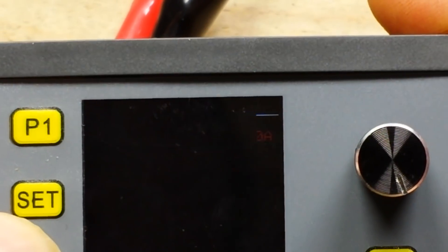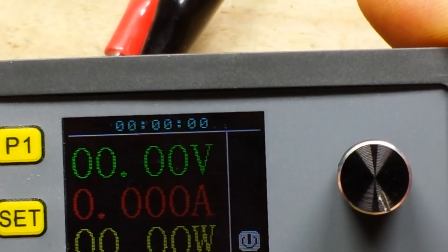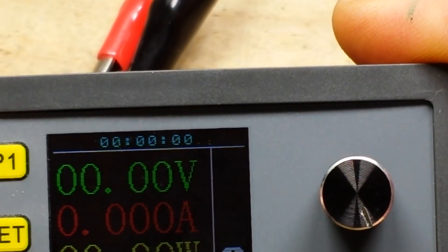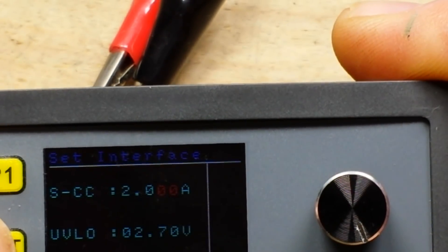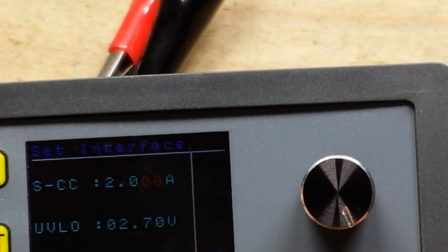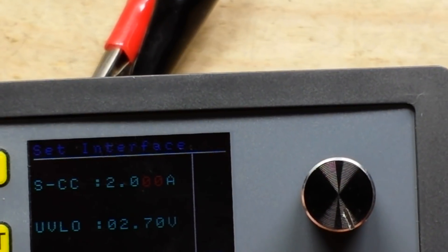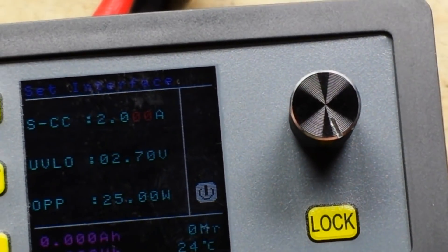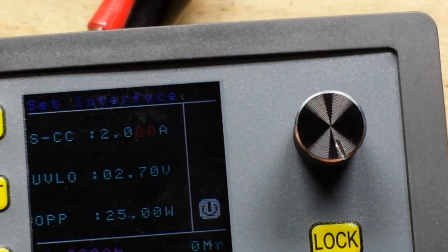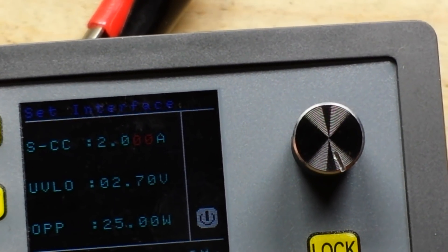P1, nothing. P2. Okay, so that gives us like our running screen. Takes us to that screen. Set. Okay, so this is where we can set our under voltage, our over power, and our current. So let me get everything hooked up and we'll take a look at her.